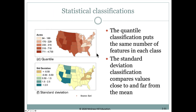Another approach is from a statistical perspective. We take all of the values and, whether or not the distribution looks normal, we can identify the mean — right in the middle — and then find what 1 and 2 standard deviations are in the plus and minus direction from there.